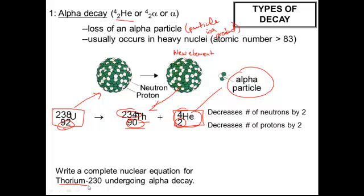Let's start with thorium-230. So that means thorium-230, and on the periodic table, thorium is 90, undergoes alpha decay.